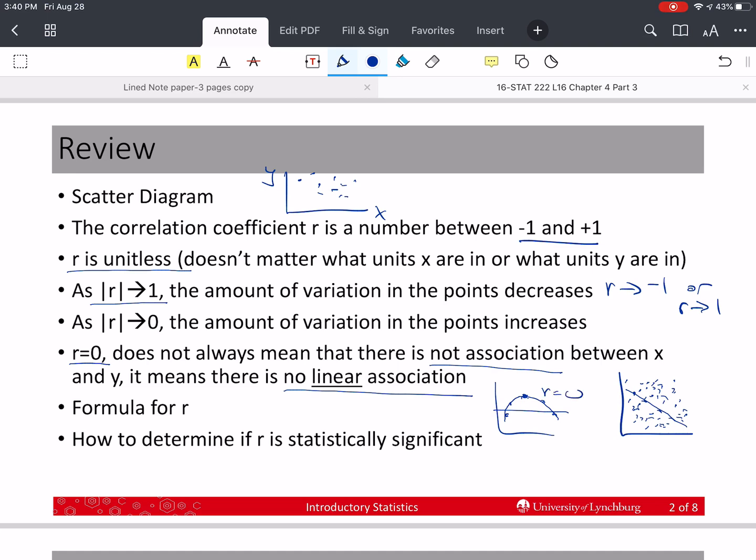We went over the formula for R. It's a lovely, simple formula. I'm being sarcastic for most of you. And it's N sum of X squared minus sum of X quantity squared, and then the same thing for Y, sum of Y squared minus sum of Y quantity squared.